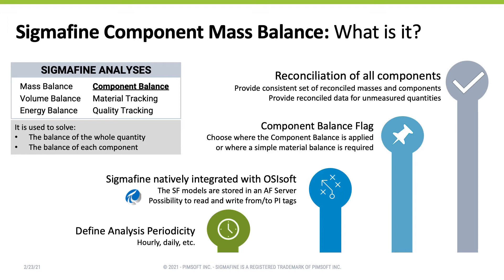You can activate the component balance flag in areas of your model where you have analyzers. In areas without analyzers, only the mass balance will run. Sigma Fine model analyses are saved in the PI Asset Framework. You have the possibility to read process data from PI or other historians and write back to PI or other historians. You can also set how often you want to run it — hourly, daily, etc. It's an open framework which can be configured to meet your scope.